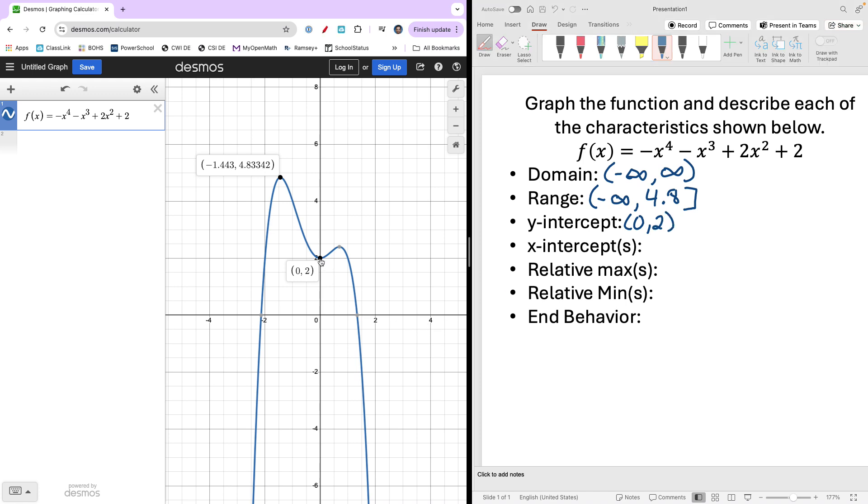How about x-intercepts? Let me clear these other values off. We can see that this particular function crosses the x-axis in two places. They're not nice values. Let's just round to one decimal. So there are two of them. We have negative 2.1 and the other one is 1.3.